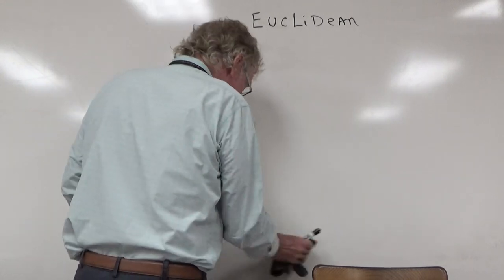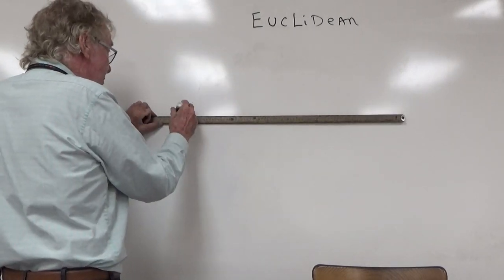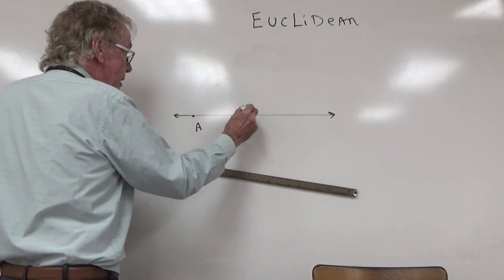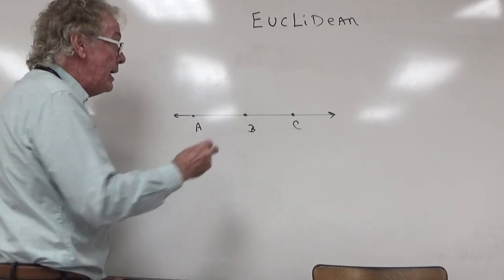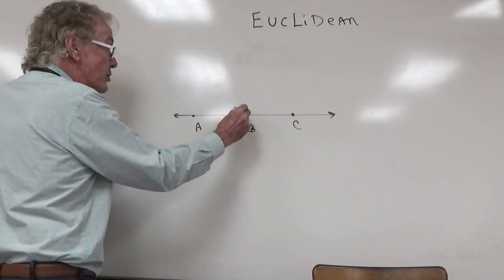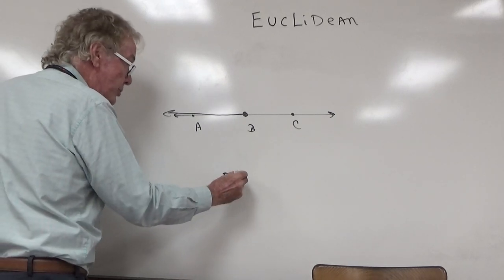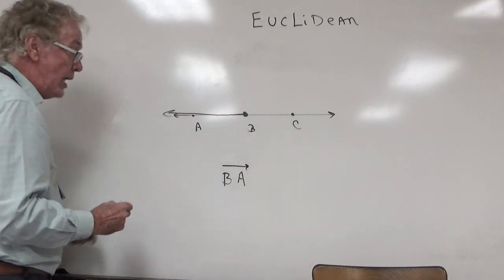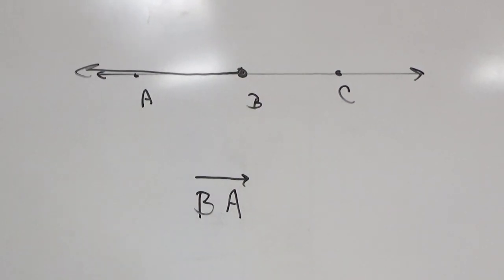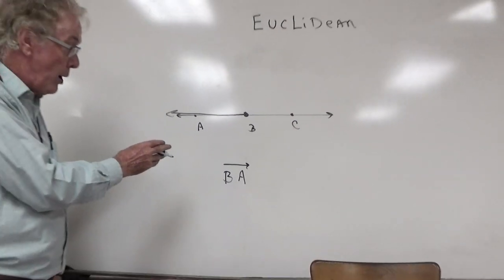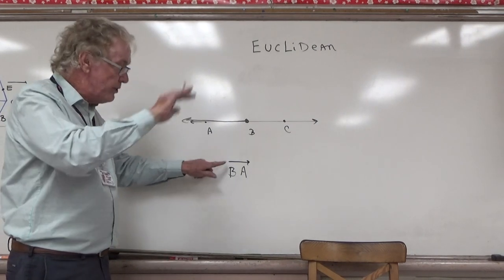Next is Ray. Let me draw a picture. Here's a line — I'll put three points on it: A, B, and C. A ray is a subset of a line, a part of a line, and it starts at a single point called the endpoint and goes forever in one direction. How would I name that ray? It starts at B, goes through A, and keeps on going. Whenever you name a ray, you start at the endpoint and show the direction in which it travels — Ray BA. So a ray is a subset of a line with one endpoint, infinite in the other direction.